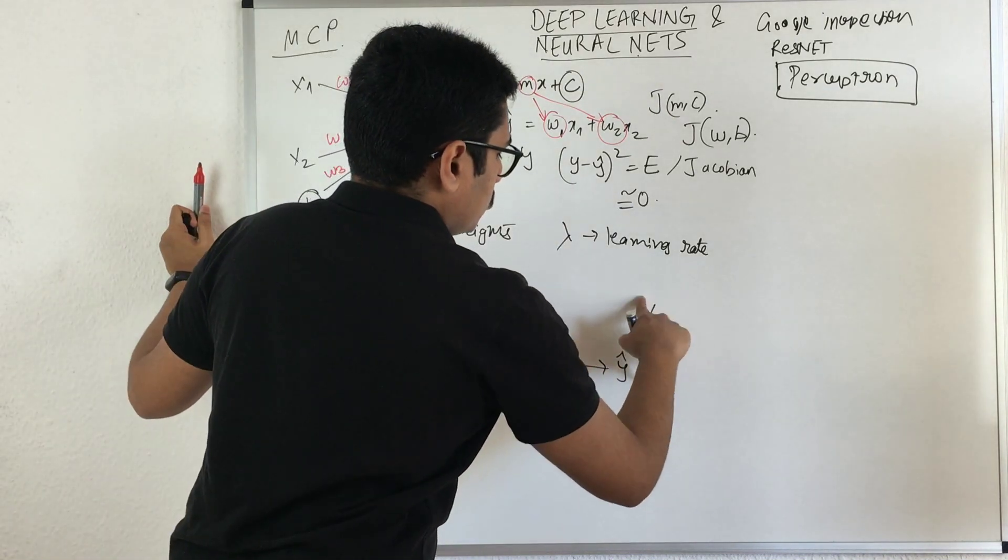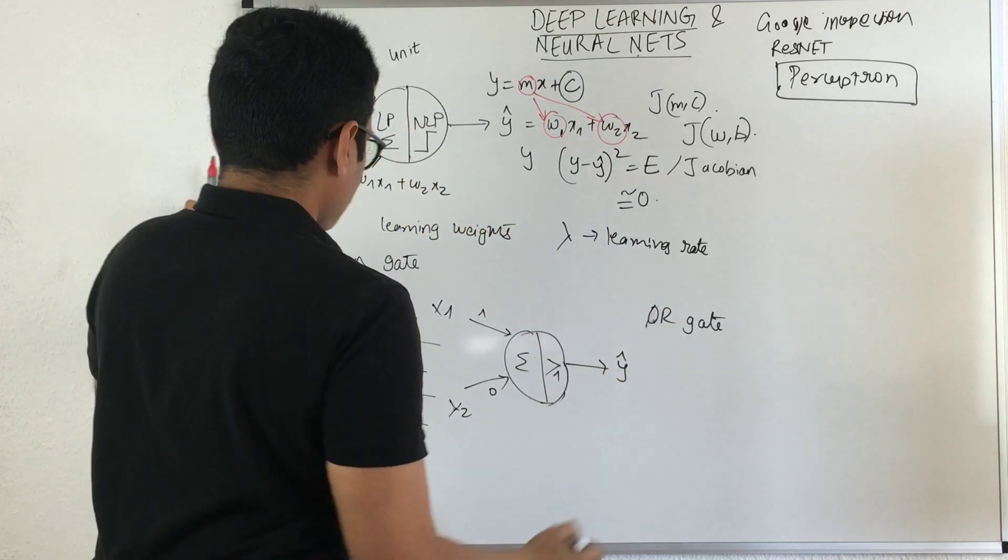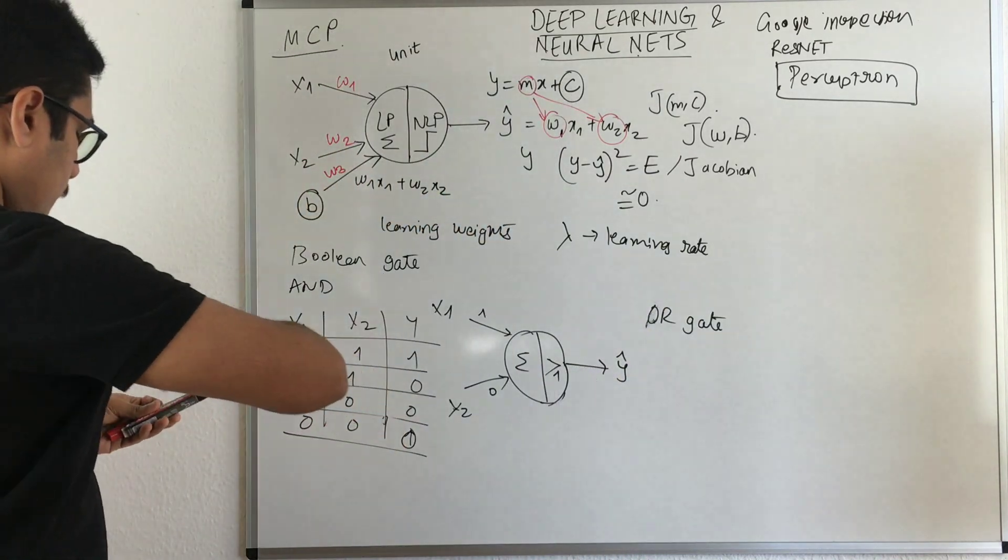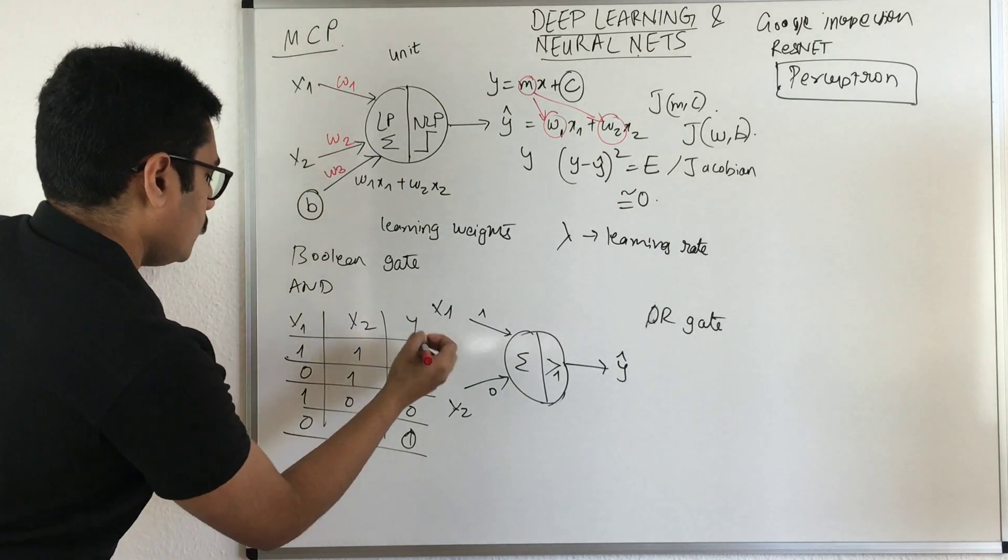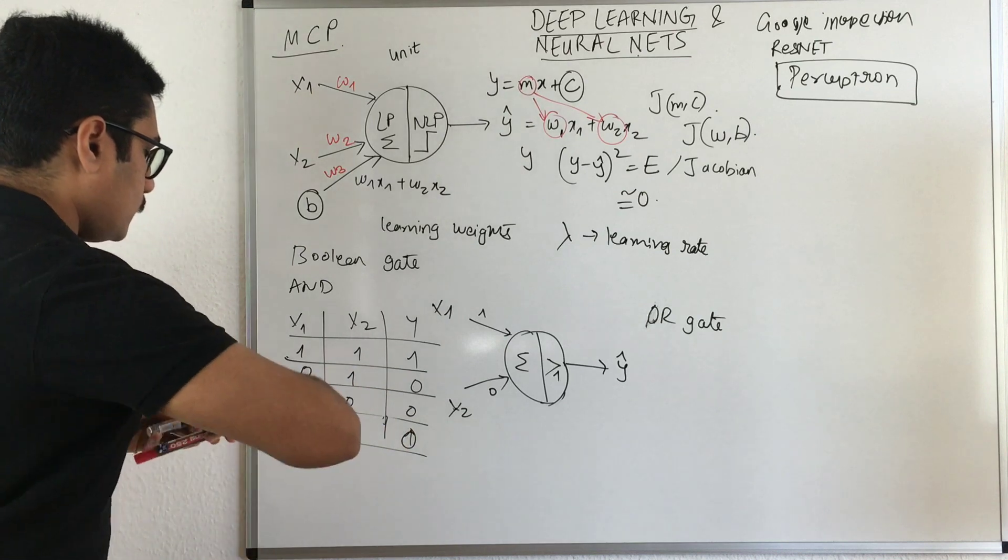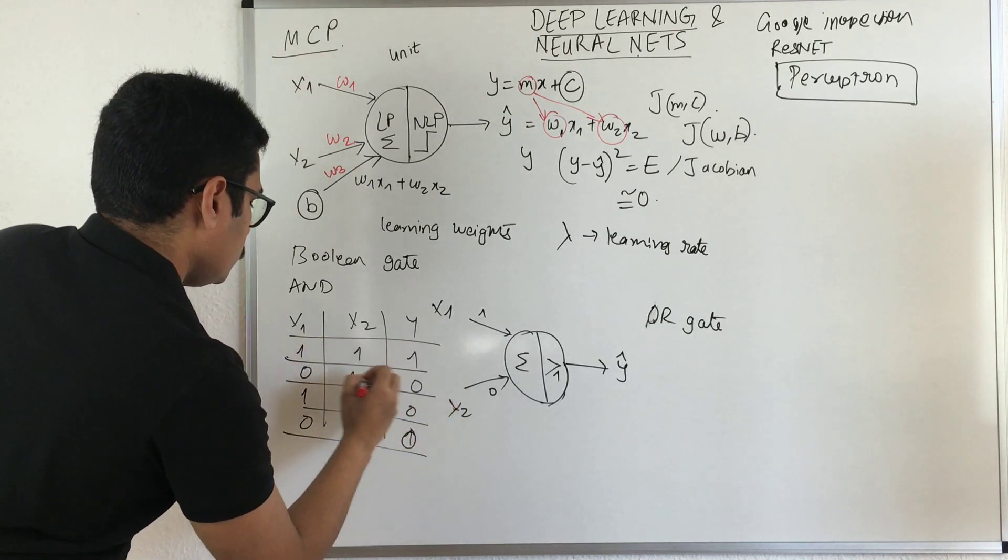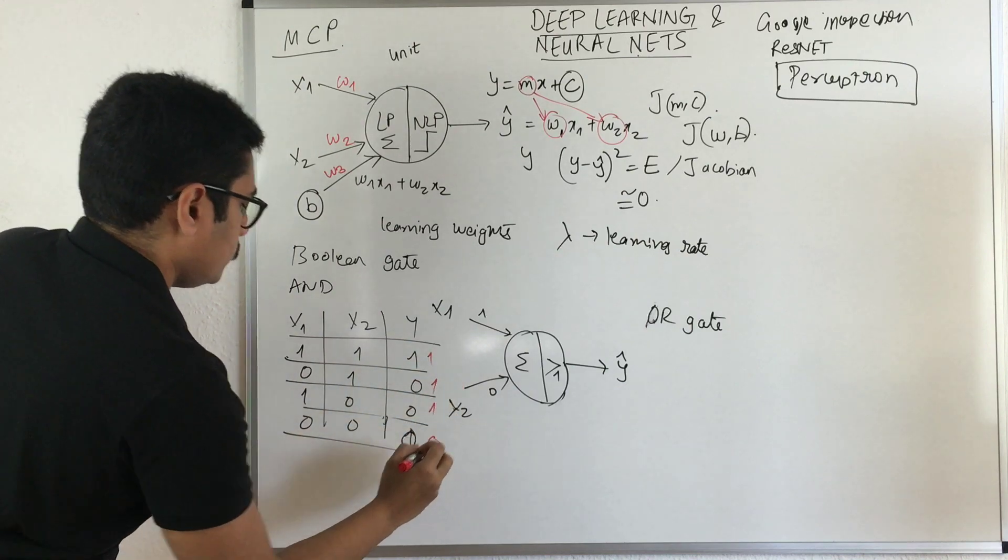Then you have the OR gate. In OR gate also the scenario is similar, but here whenever you have 1 that is 1. In these cases: 1 and 1 is 1, 0 and 1 is 1, and for this it is 1. For 0 and 0 it is 0.